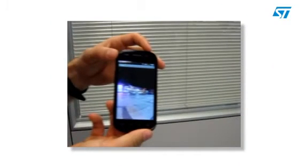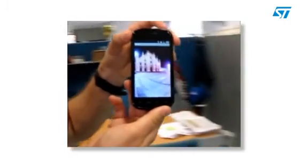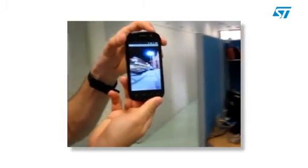To better appreciate this functionality, look at this panoramic view of Milan in Italy. If the user turns 360 degrees, the image on the screen turns accordingly and in real time.